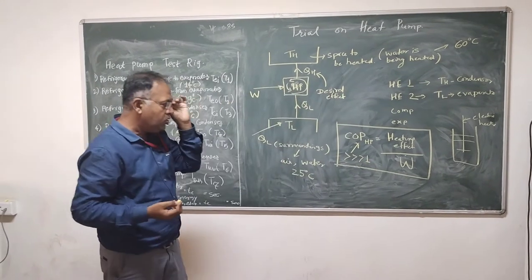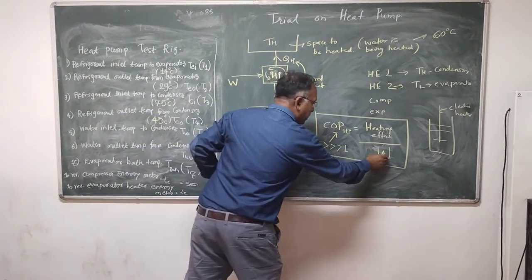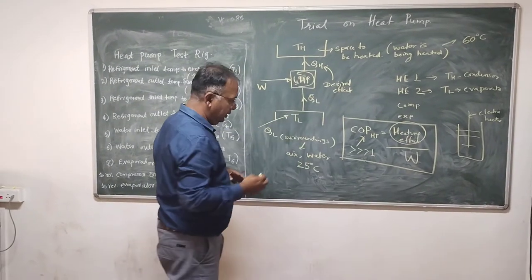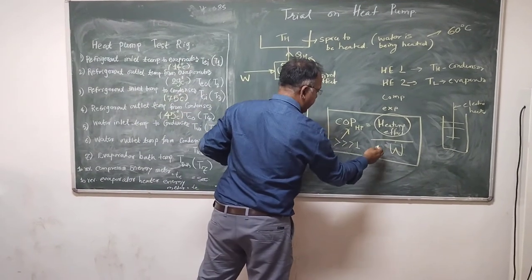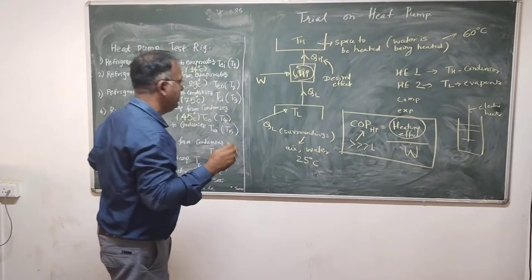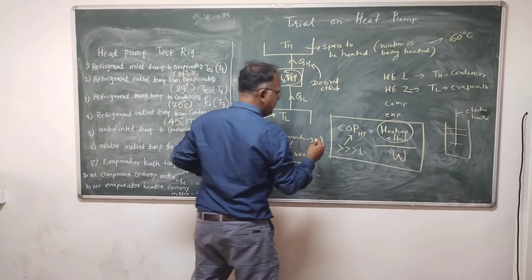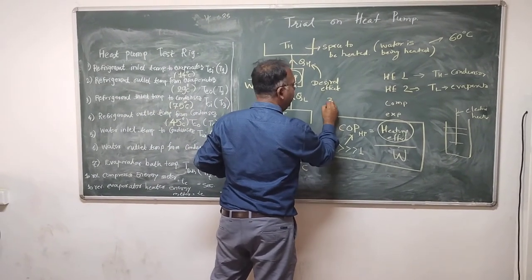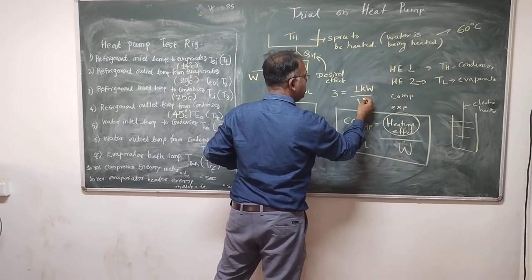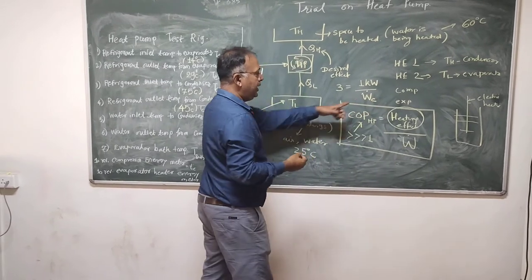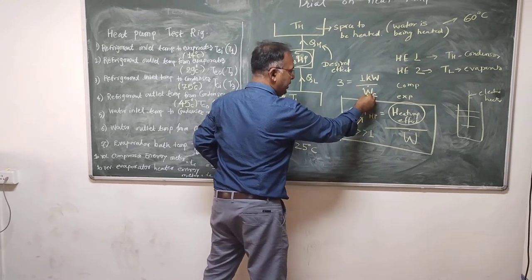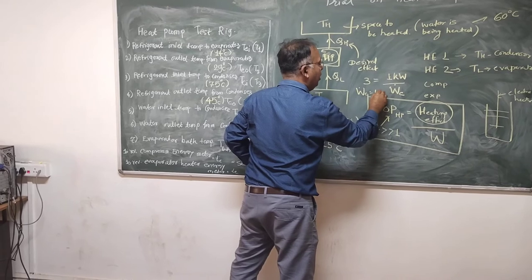If the coefficient of performance of the heat pump is greater than 1, you understand that for achieving the heating effect, the electricity required would be less than the electricity consumed by an electric heater. Let us say the coefficient of performance is 3 and you want a heating effect of 1 kilowatt. Then the electrical power consumed by the compressor is 1/3 kilowatt.